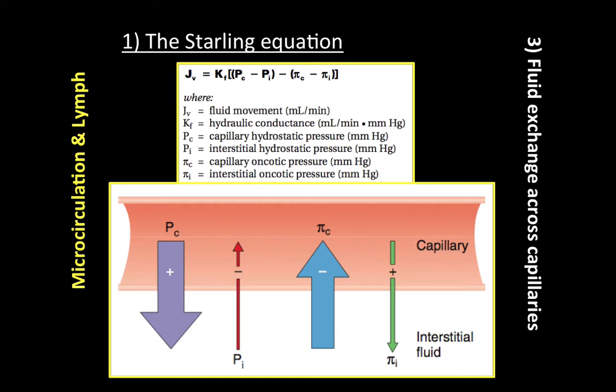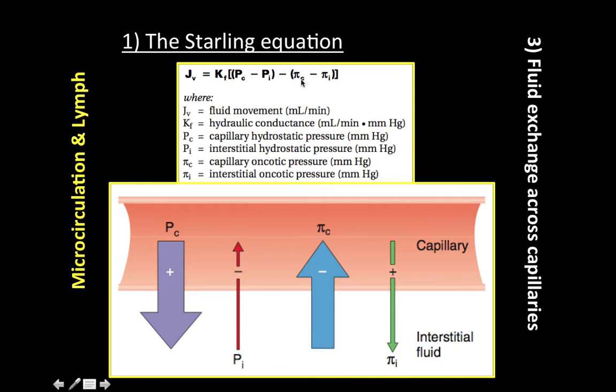PI is the interstitial fluid hydrostatic pressure. An increase in PI will oppose filtration out of the capillary. It is normally about zero millimeters of mercury, or slightly negative.